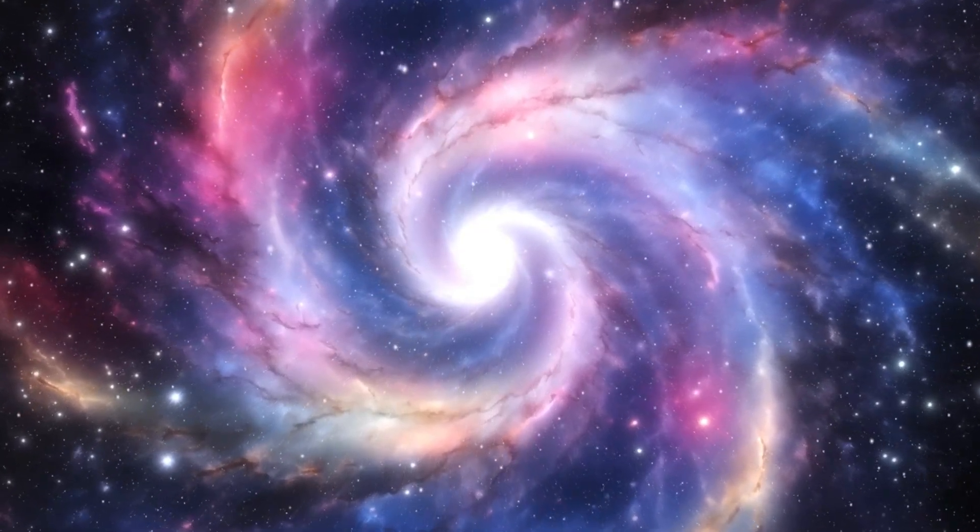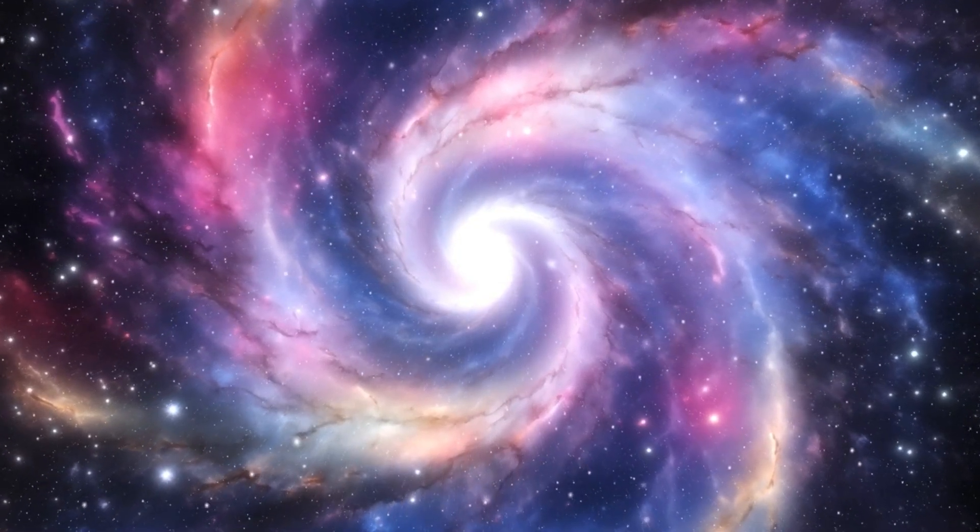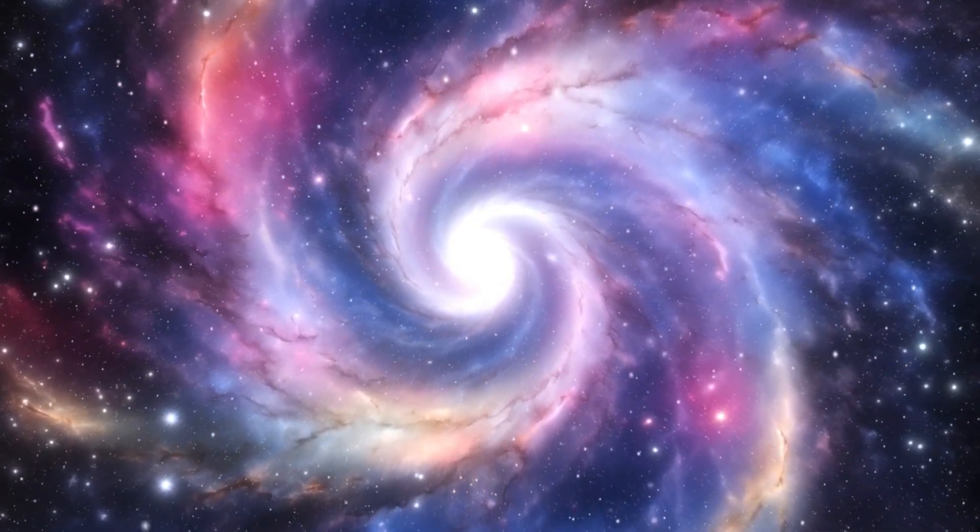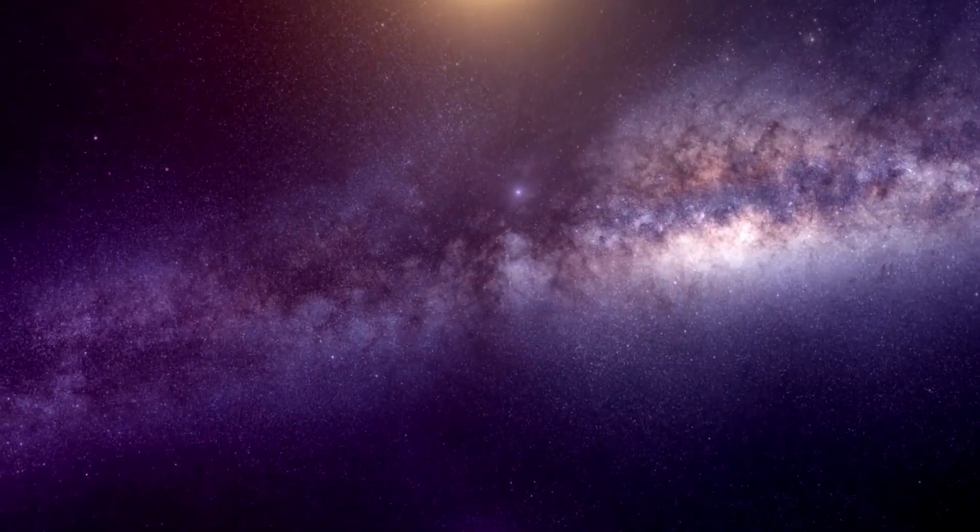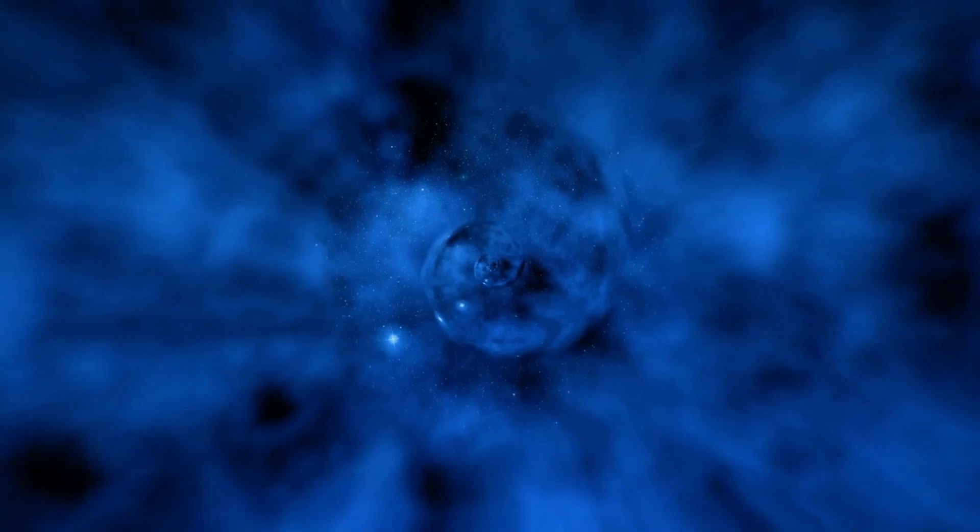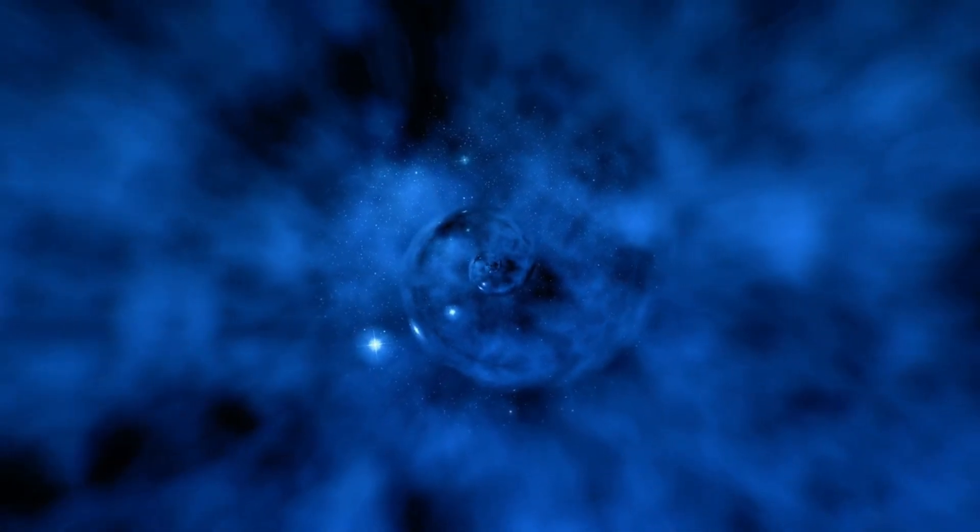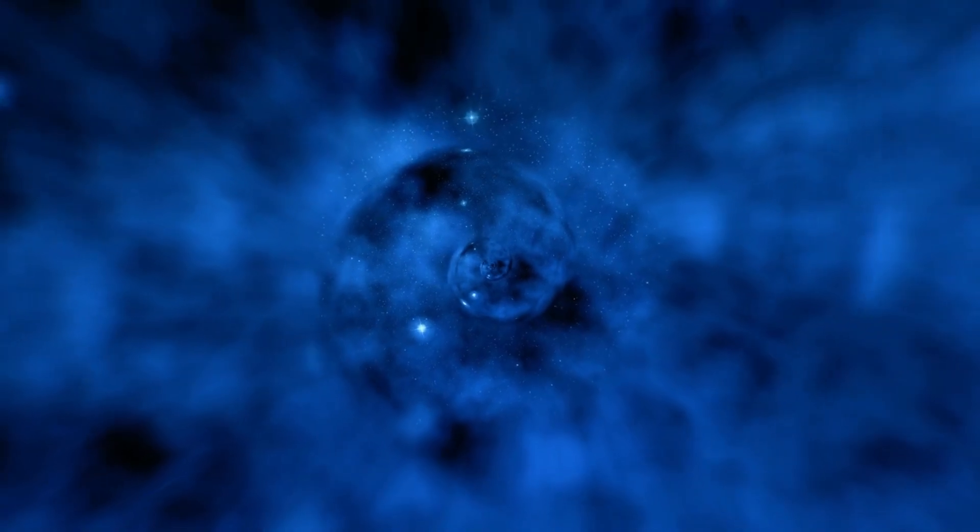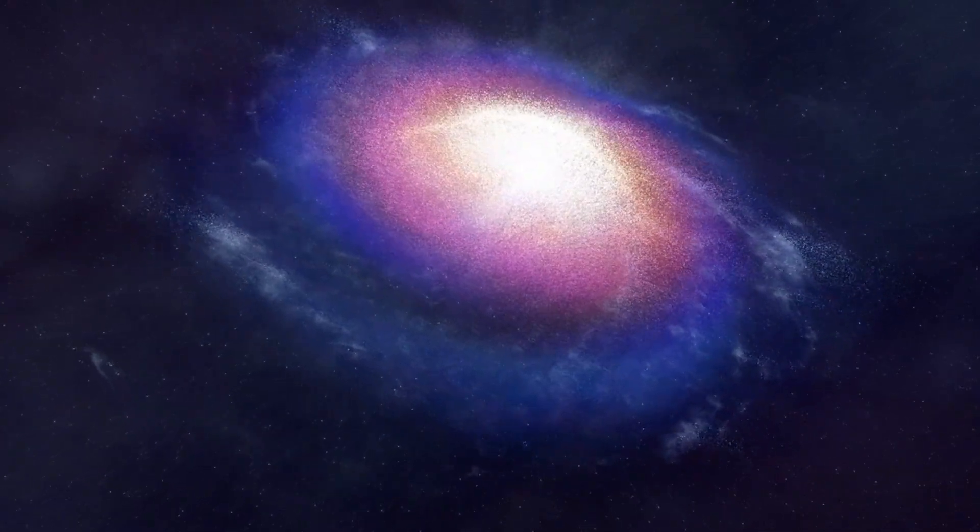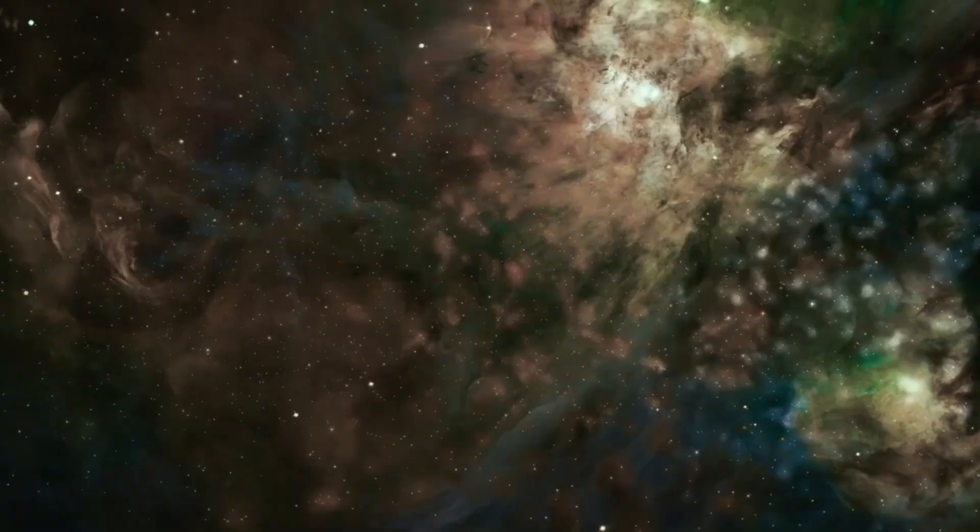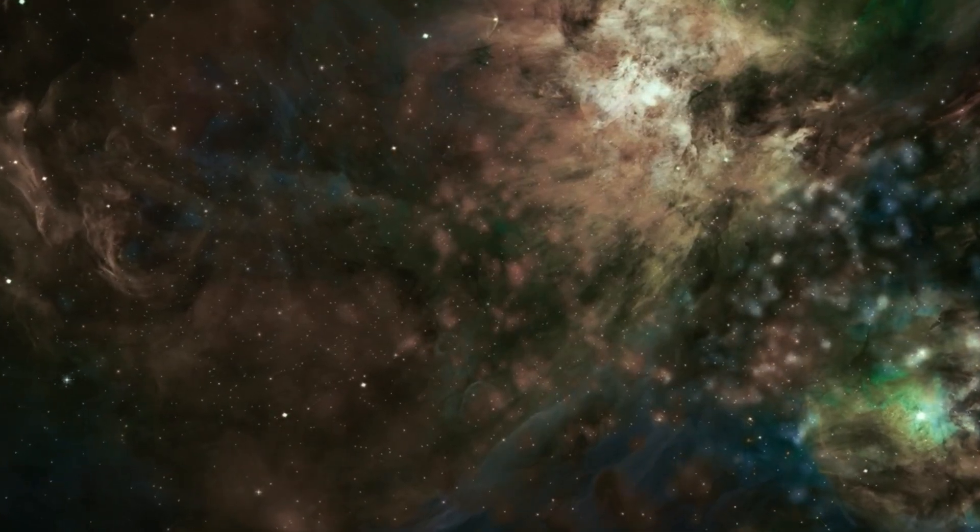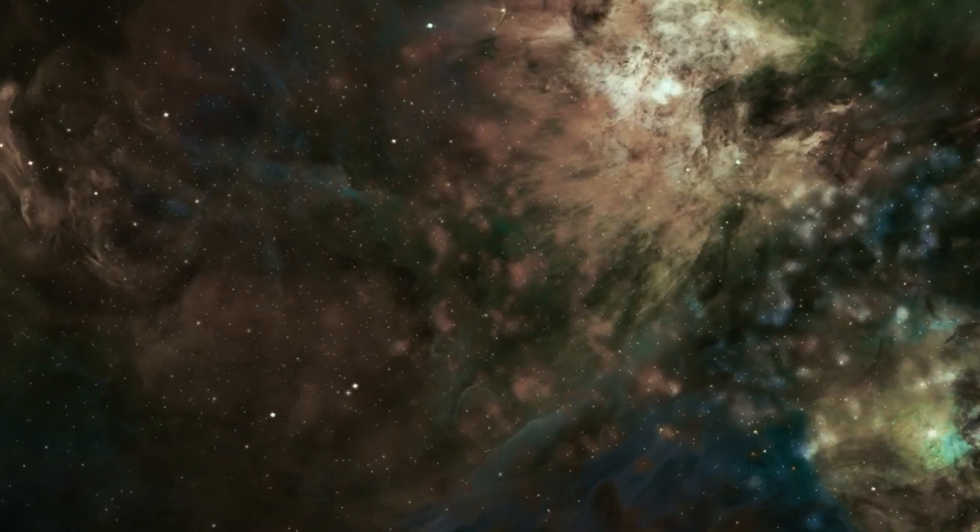Deep within Betelgeuse, a seismic shift has occurred. The explosion of expelled material into space has created a magnificent dust cloud, obscuring a significant portion of Betelgeuse's brilliance. This has transformed it from a dazzling guide to a dimmer light in the night sky. Once among the ten most brilliant stars, Betelgeuse now ranks lower than the twentieth most brilliant. This dramatic change in brightness has intrigued researchers and astronomers. Some theories suggest that massive sunspots or dust clouds might be responsible, while others consider the possibility of cyclical patterns.